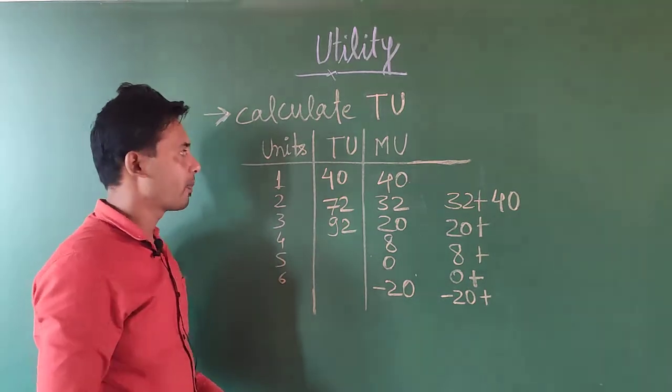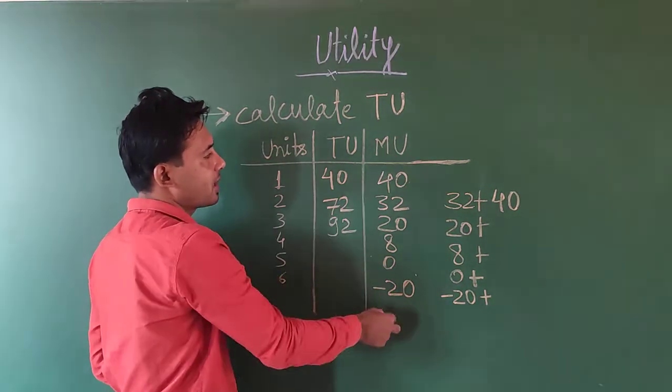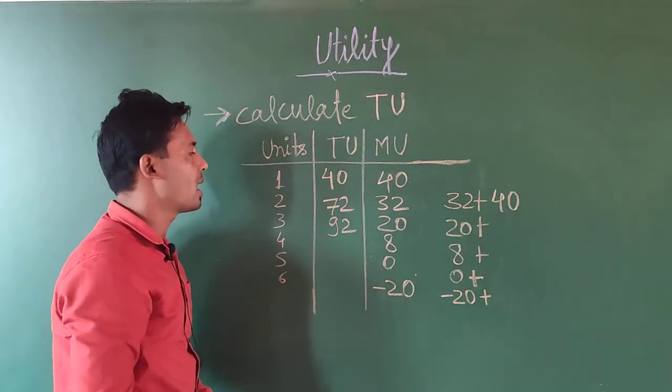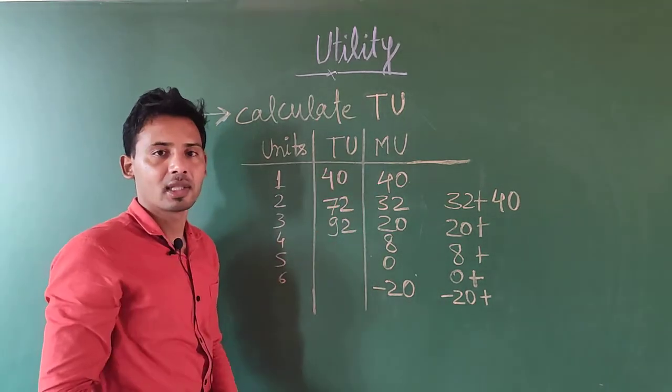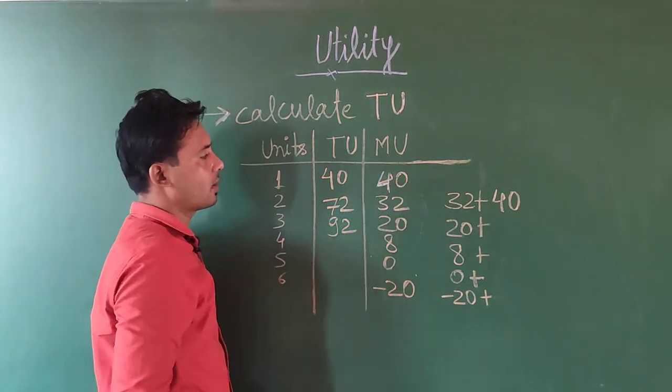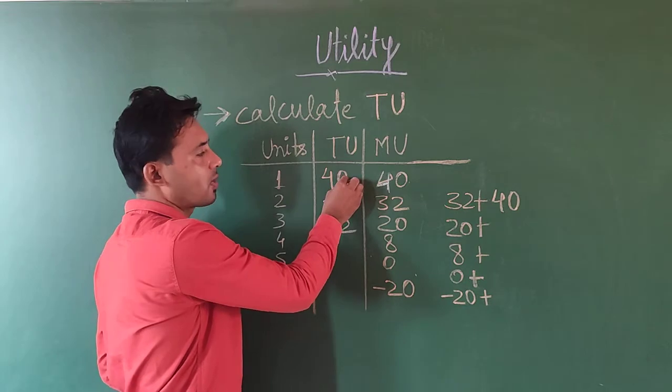We have units here. Suppose marginal utility is given. If we have marginal utility given and total utility we need to calculate, the first number is here. We have 40. Write down this 40.